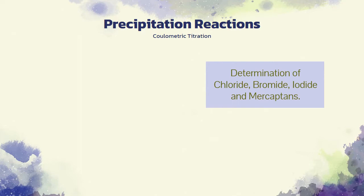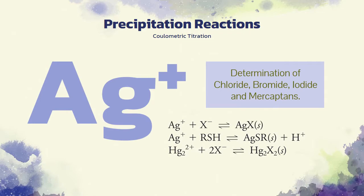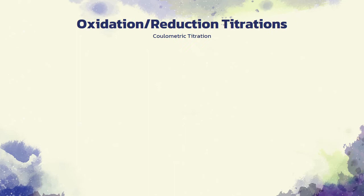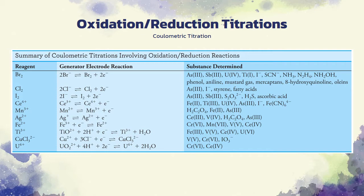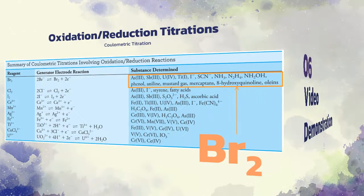Several precipitating reagents can be generated coulometrically. The most widely used of these is the silver ion, which is generated at a silver anode. Coulometric titrations have also been developed for many, but not all, redox titrations. This table reveals that a variety of redox reagents can be generated coulometrically. For example, the coulometric generation of bromine forms the basis for a large number of coulometric methods.